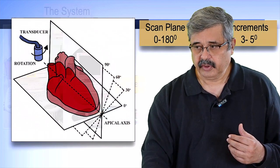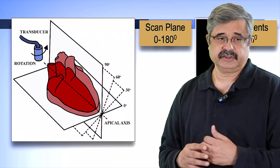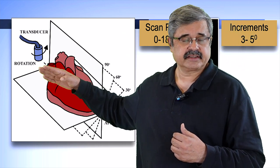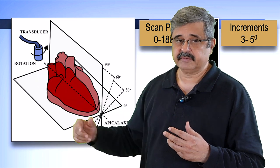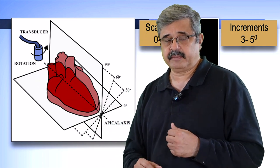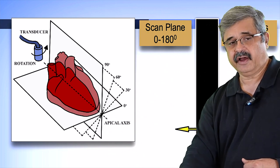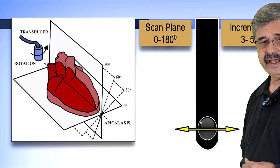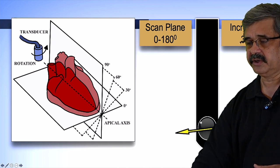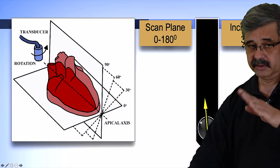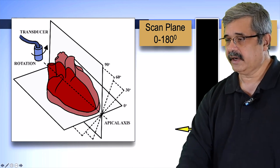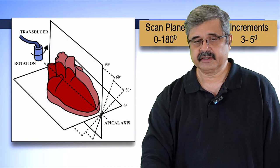Looking at the system, the probe was behind the heart and the scan plane rotated at three to five degrees. We'll spend more time on the animations demonstrating how the scan plane rotated. In essence, the scan plane essentially rotated from zero to five degrees in and around the middle axis of the TEE probe.